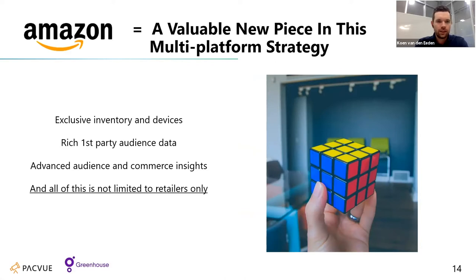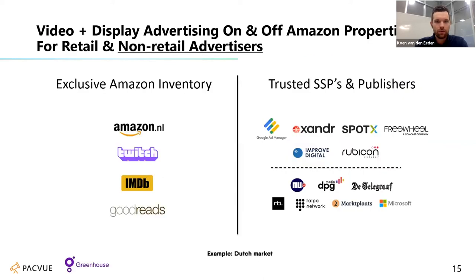Most importantly, DSP is not limited to retailers and people that sell on the platform only. It's a video and display offering for both retail and non-retail clients. In the Netherlands, for example, it combines exclusive Amazon inventory — Amazon.nl and also IMDB — with trusted SSPs and publishers. So it's on and off Amazon properties, using the rich data of Amazon.